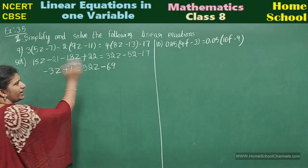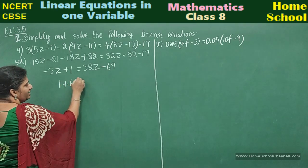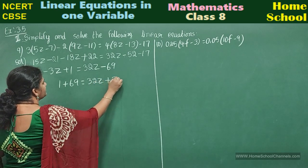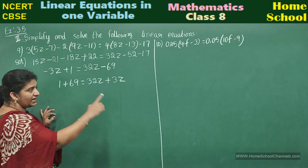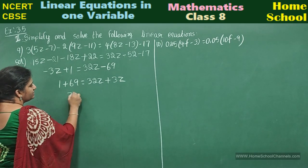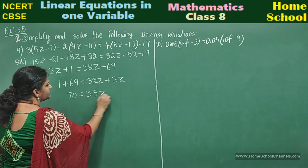Now observe here: 32z and minus 3z. Better take this variable this side and number this side. 1 plus 69 equals 32z plus 3z. If you transpose minus 3z to this side, it becomes plus 3z. 1 plus 69 is 70. 32z plus 3z will be 35z.